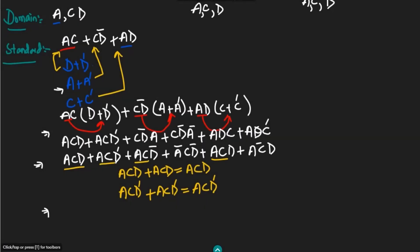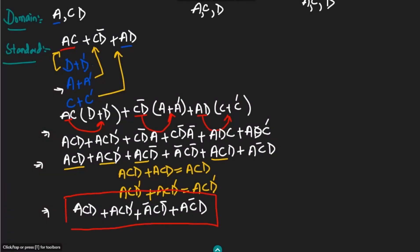So the final standard SOP form is: ACD + ACD' + A'CD' + AC'D. This is the standard form of the equation in which all domain variables A, C, and D are included in every product term. This is the solution of part A of question 23 in the context of question 25.